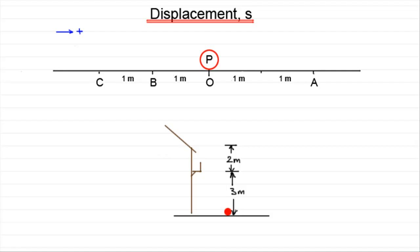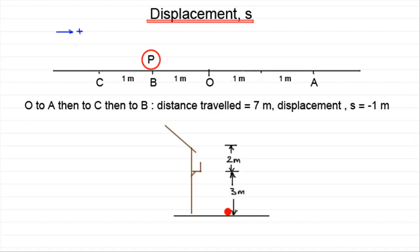So suppose the particle P travels to A, out to C and back to B. What would be the distance that it's travelled? And what would be the displacement? Well, the distance travelled would clearly be one, two, three, four, five, six, seven meters. And the displacement would be minus one meter.